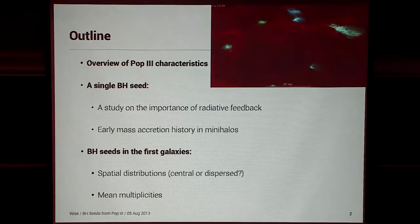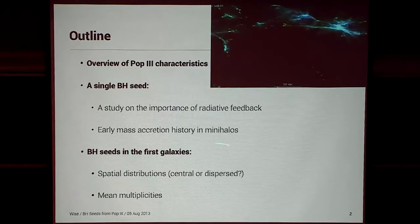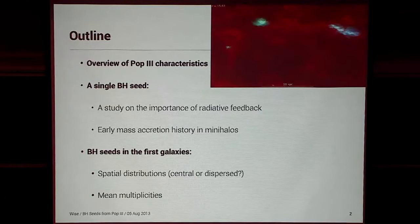How are they distributed in these first galaxies? Do we have a central black hole or not, or are they dispersed through the ISM? And I'll end with how many of these seeds we actually expect in the first galaxies.